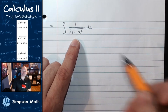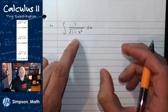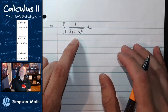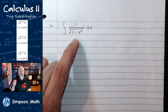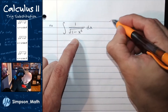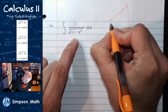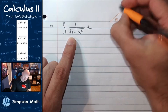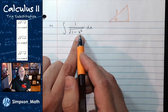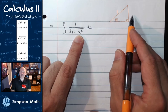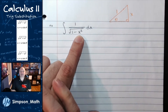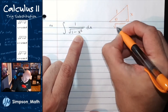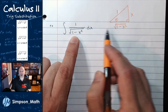For all trig substitution problems, I want you to draw a triangle — the scenario triangle. I'm going to draw a right triangle such that 1 is my hypotenuse. My u, the function being squared, is x. If I solve for the missing side length, that would be the square root of 1 minus x squared — and that's what I have in my integrand.